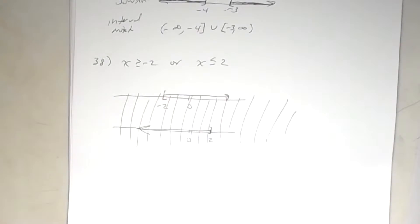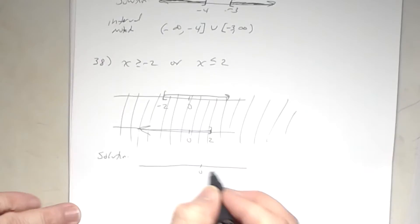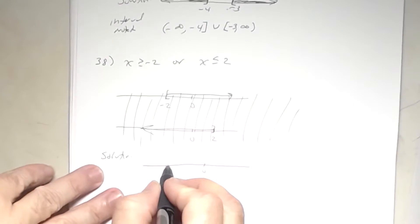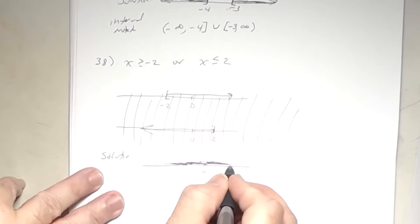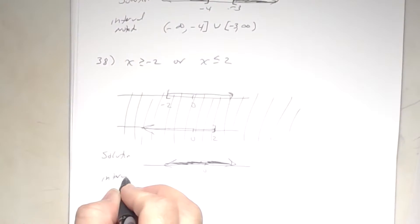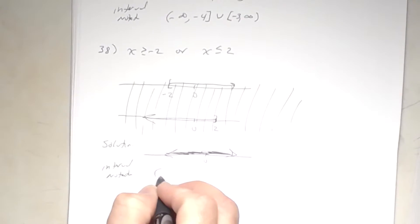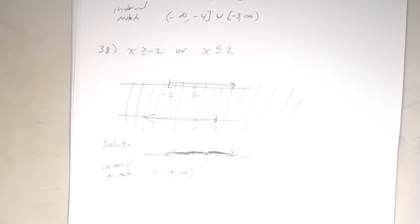Since every number is a solution, on the number line just shade everything with arrows in both directions — no brackets or parentheses at endpoints, just everything shaded. The interval notation is parenthesis negative infinity, comma infinity, parenthesis.